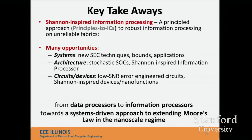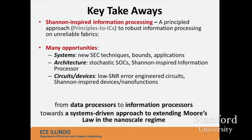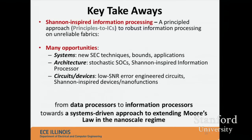The key takeaways: Shannon-inspired information processing is meant to make the design of future computing systems principled — able to embrace the statistics of the circuit fabric to predict performance and design inference-based systems of the future. There are opportunities for researchers with backgrounds in statistical signal processing, estimation and detection, communications, and machine learning. Architecturally, these cores can be stitched together into a stochastic system on a chip: one deterministic core farms out tasks, and those tasks are executed on accelerator cores using Shannon-inspired techniques.